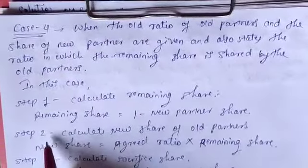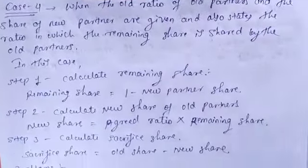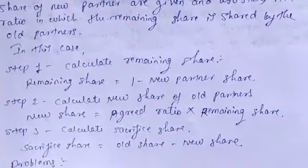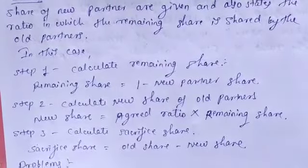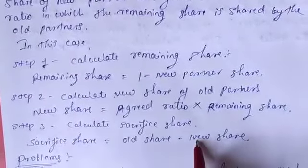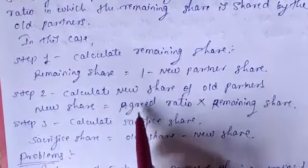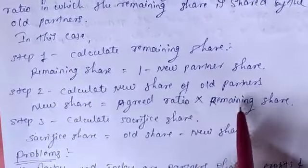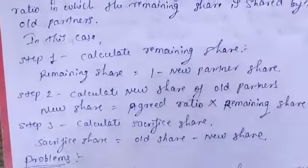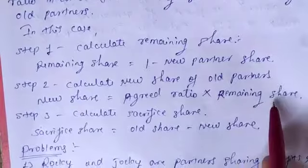Step 2: Calculate the new share of old partners. You should calculate the new share here because the main formula for calculating the sacrifice ratio is old share minus new share. The old share is already given in the problem, but we have to calculate the new share. New share equals agreed ratio multiplied by remaining share.